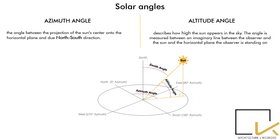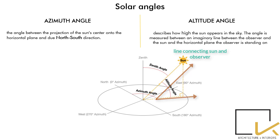Here, the azimuth angle is around 120 degrees from the north. The altitude angle describes how high the Sun appears in the sky. The angle is measured between an imaginary line connecting the observer and the Sun, and the horizontal plane the observer is standing on. The altitude angle basically defines the height of the Sun from the horizontal plane. Higher the height of the Sun, the hotter the place on Earth because of the direction of the rays.